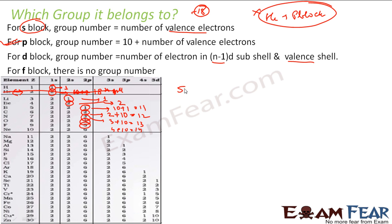Fluorine it is 5 and it is p block. So it will be 5 plus 10, 15 group. For neon it is 6, right? The valence electron is 6 and it is p block. So it will be 6 plus 10 that is 16. This is fine.